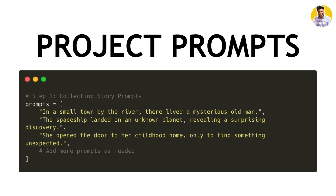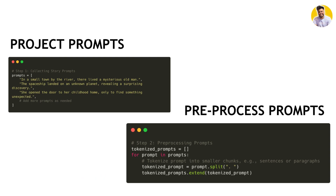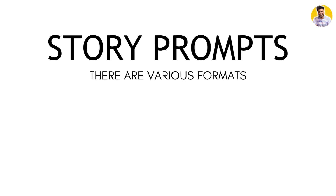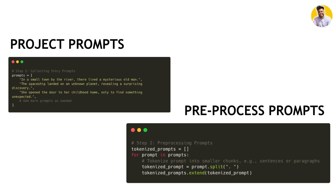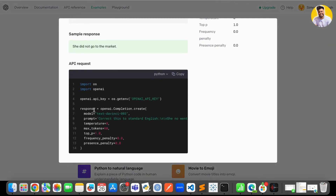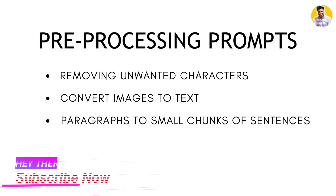Once you have collected the story prompts, it's time to pre-process them to ensure they are in a suitable format for the GPT-4 model. Story prompts can come in various formats — sentences, paragraphs, or even images. Depending on the input format required by the GPT-4 API, you need to pre-process the prompts to ensure they are in the right format, since GPT-4 API can only understand prompts written in a single line. This may involve removing unwanted characters, converting images to text, or splitting long paragraphs into smaller chunks that the GPT-4 API can understand.